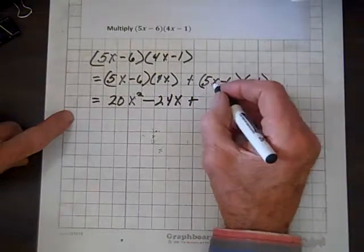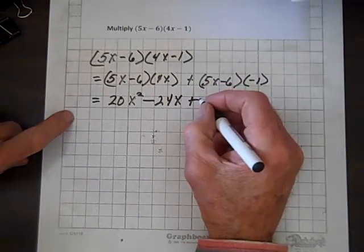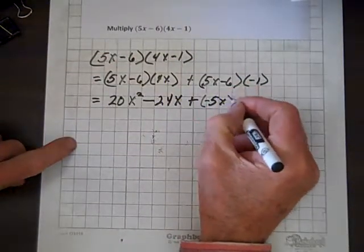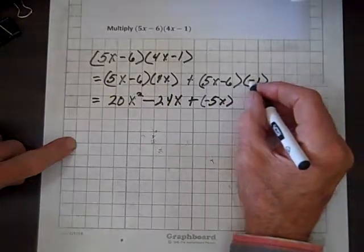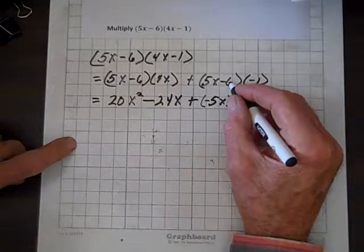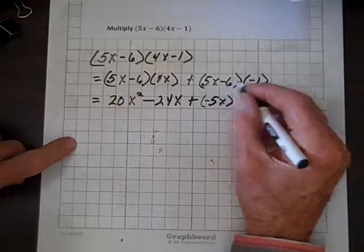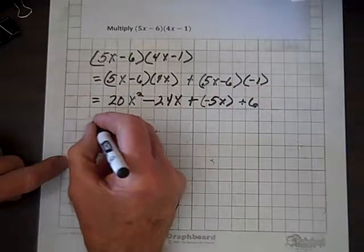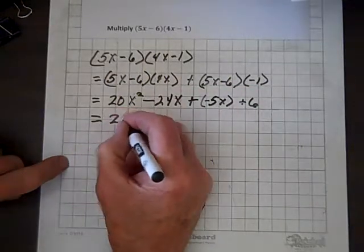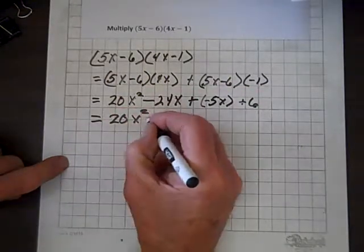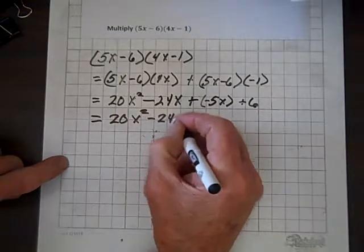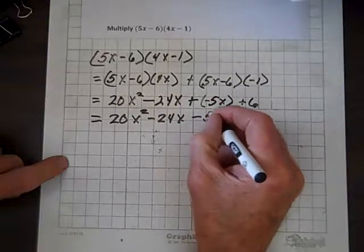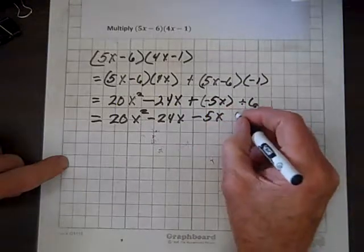Now plus, and negative 1 times 5x is negative 5x, and negative 1 times negative 6 is plus 6. So let's keep going, 20x squared minus 24x, and a positive times a negative is a negative 5x, plus 6.